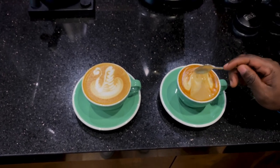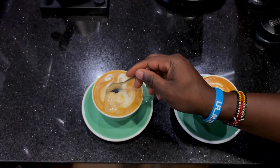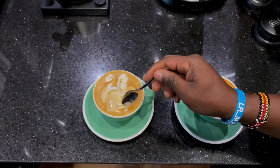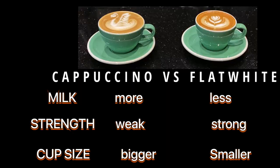Here are the differences you can see: the flat white has less foam, and the cappuccino has more foam. The cappuccino also has more milk than the flat white. In terms of strength, the flat white is stronger than the cappuccino. And for cup size, the cappuccino comes in a bigger cup than the flat white.